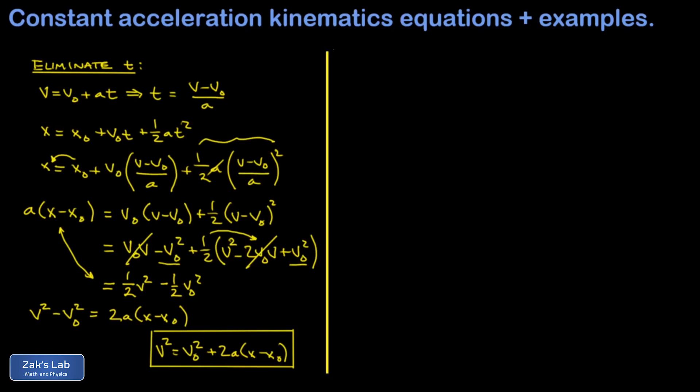Now the fourth equation in the typical list is found by eliminating a instead of t. And the whole point here is that depending on the information we're given in a kinematics question, if you already have a formula ready with one of the variables eliminated that's not given to you in the question, it's going to speed up your work. So I go back to that original v equals v0 plus a t. But this time, I'm going to solve for a. And that's v minus v0 divided by t.